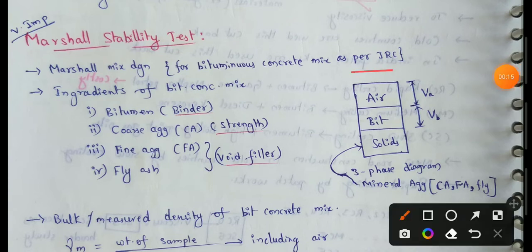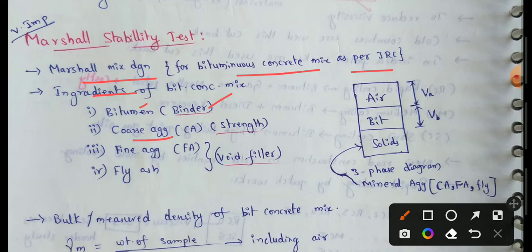First, as per IRC, we will prepare a bituminous concrete mix. This is a Marshall Mix Design. If we choose the ingredients of bituminous concrete mix, we will use bituminous concrete. We will also use coarse aggregate in the bituminous concrete mix.